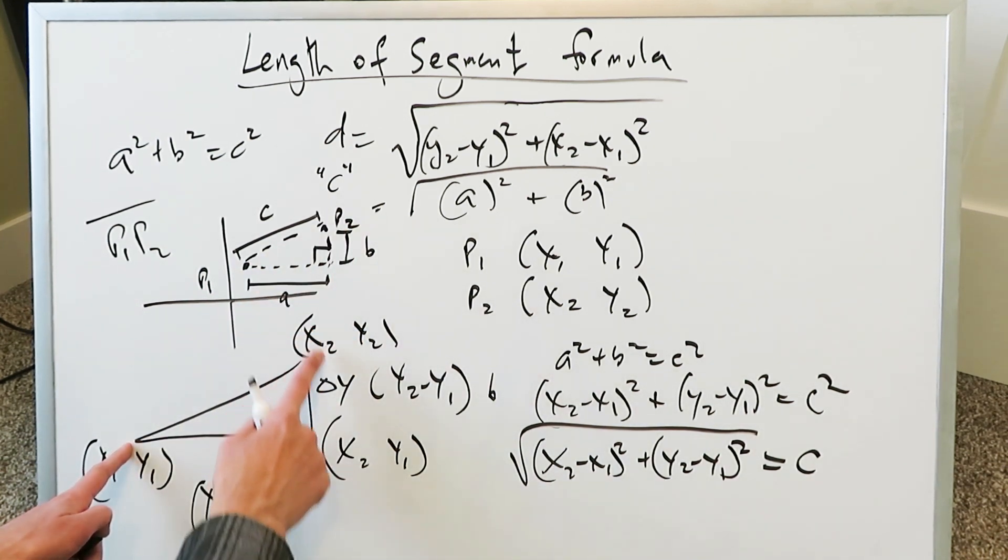x2 minus x1 whole square plus y2 minus y1 whole square under a root. It doesn't matter if you put this as a or b or this as a or b. It wouldn't matter. The result is the same. And there it is. It has been derived for you.